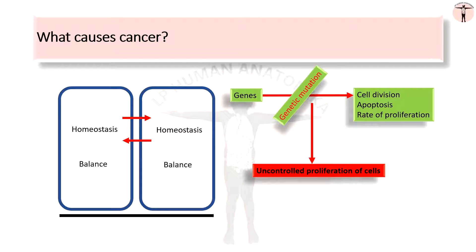Due to genetic mutations, many regulators that function in normal cell division, apoptosis, and that control the rate of proliferation start acting abnormally. The abnormal function of these regulators leads to the expression of many other genes, causing uncontrolled proliferation of cells.